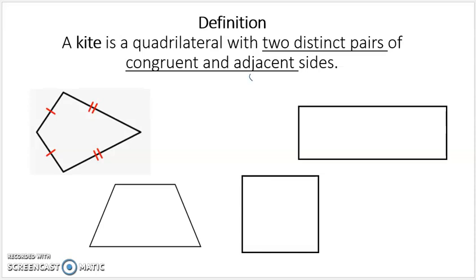In the example marked, I've got two pairs of distinct — which means different — congruent adjacent sides. The one-bar sides are adjacent because they share a vertex, and they are congruent. Then I've got another pair, the two-bar sides, which are also congruent and adjacent because they share that vertex. These two pairs are distinct, meaning completely separate. That's an example of a kite.